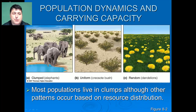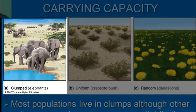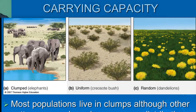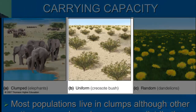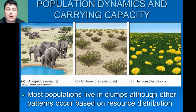In terms of dispersion, depending upon where resources are, populations are going to be dispersed in various ways. Most populations will live in clumps, like the elephants in this particular illustration. But there are other dispersion patterns, such as a uniform dispersion like creosote bushes, or a random dispersion like dandelions. It's all based upon where the resources are for that population.